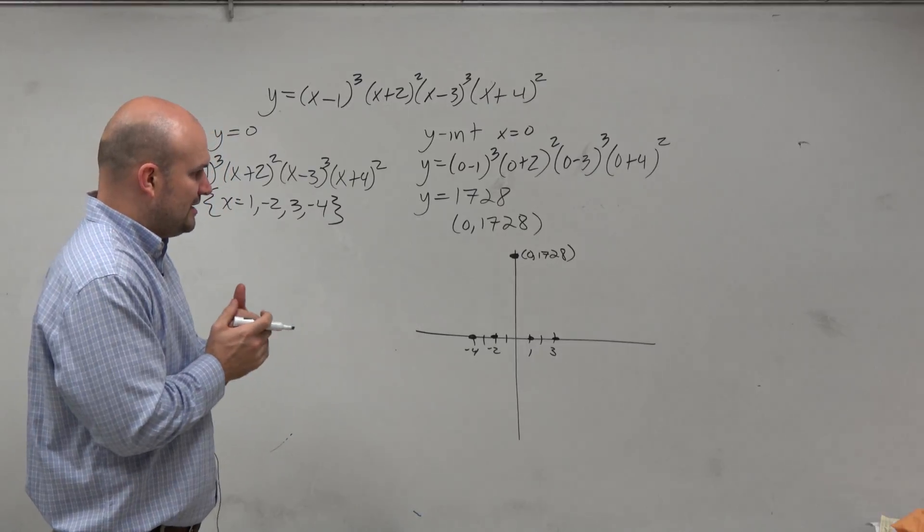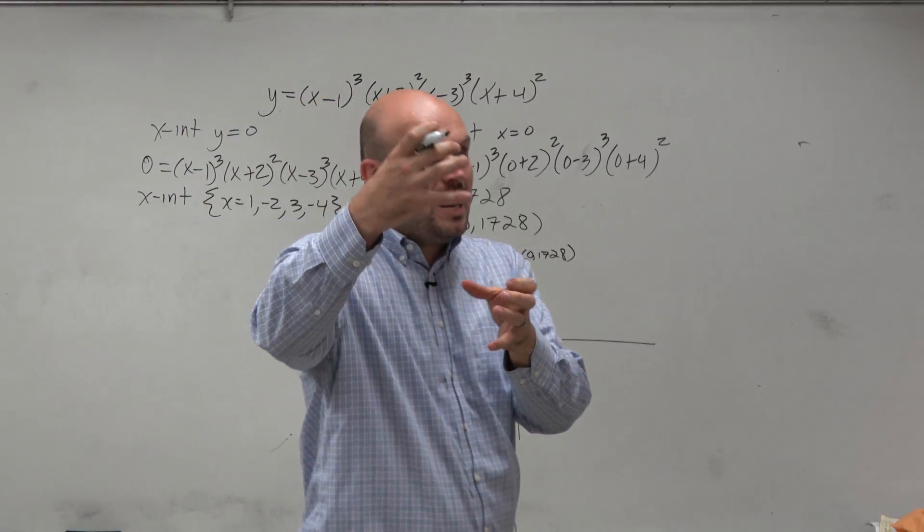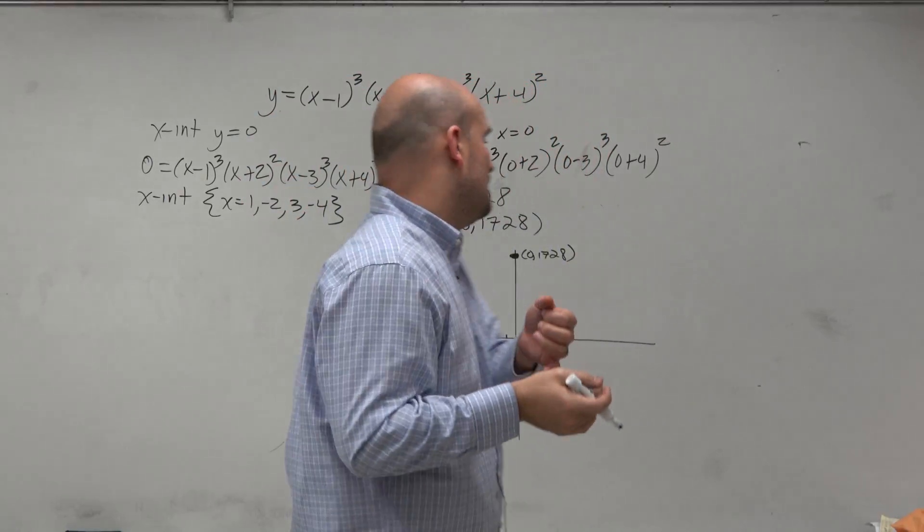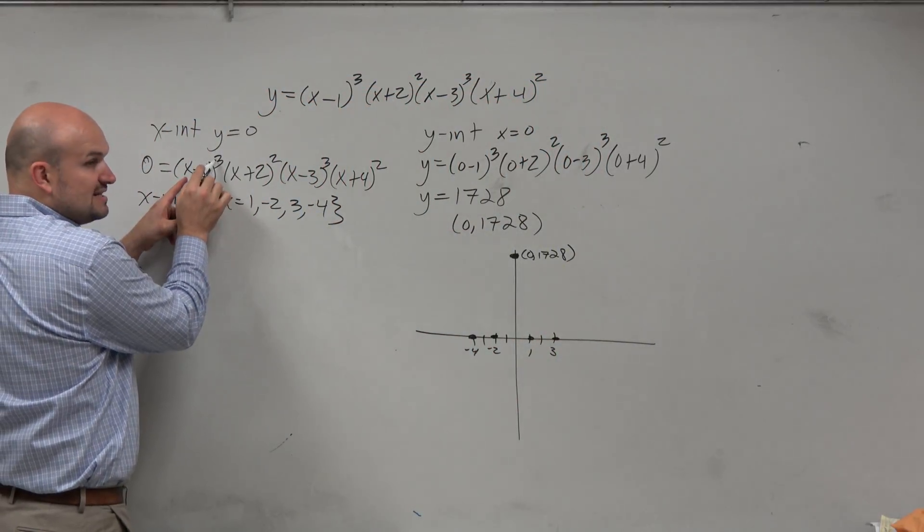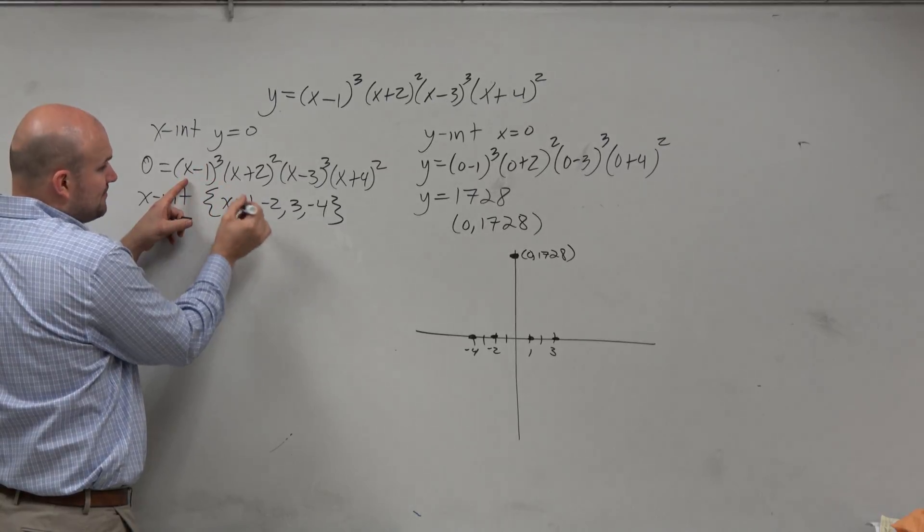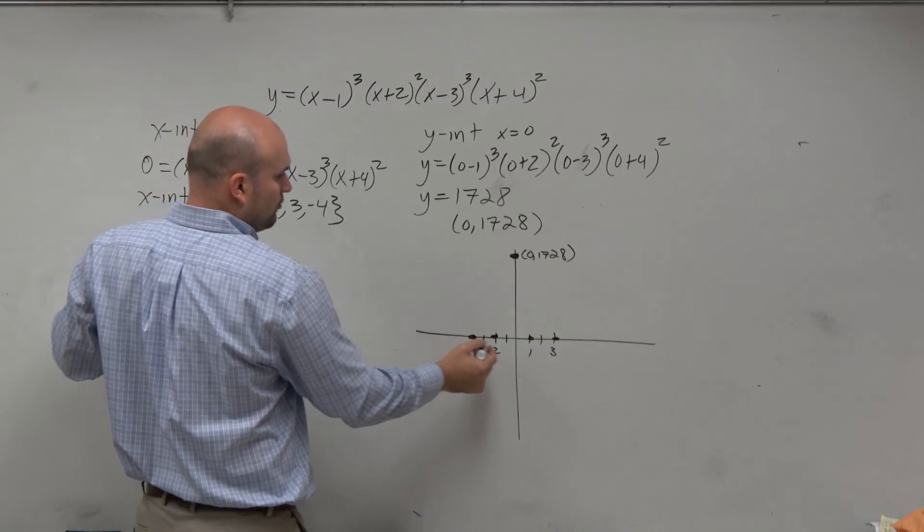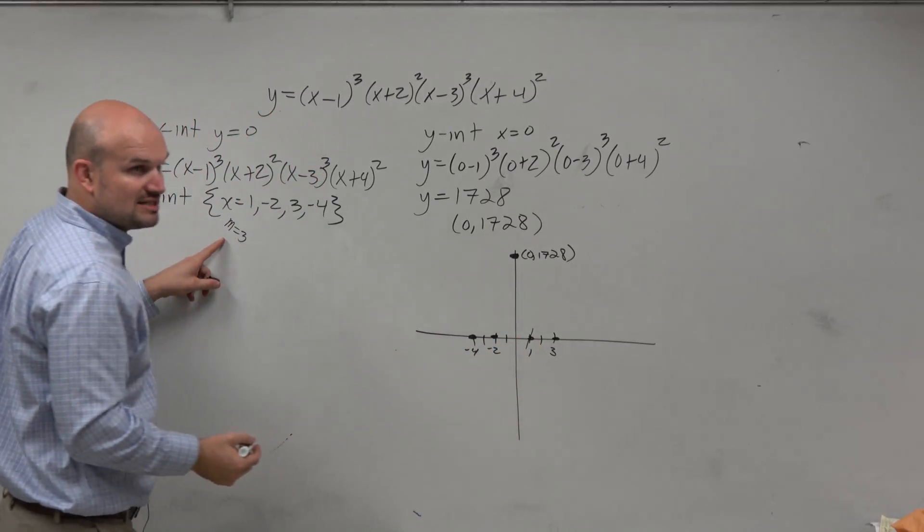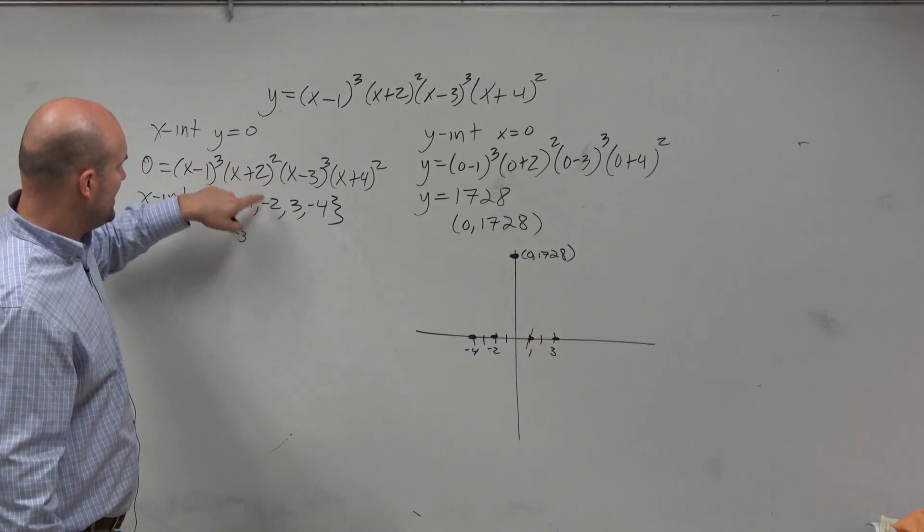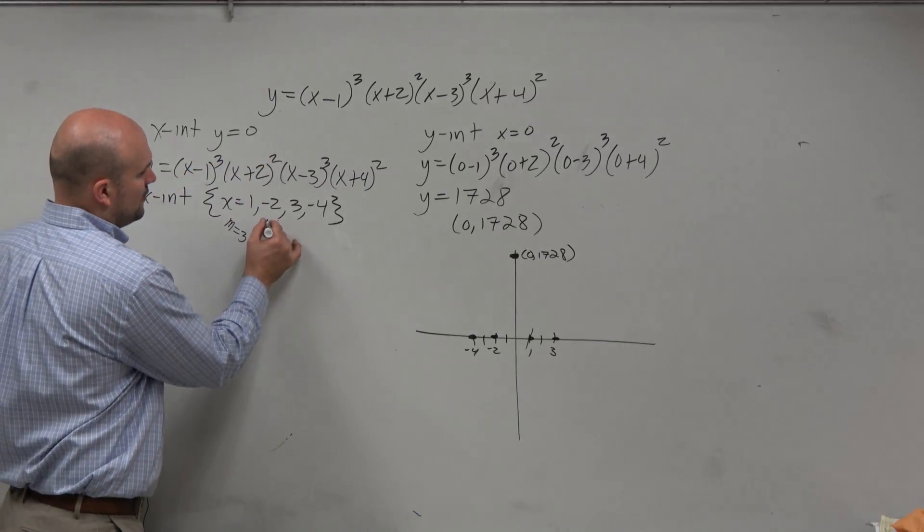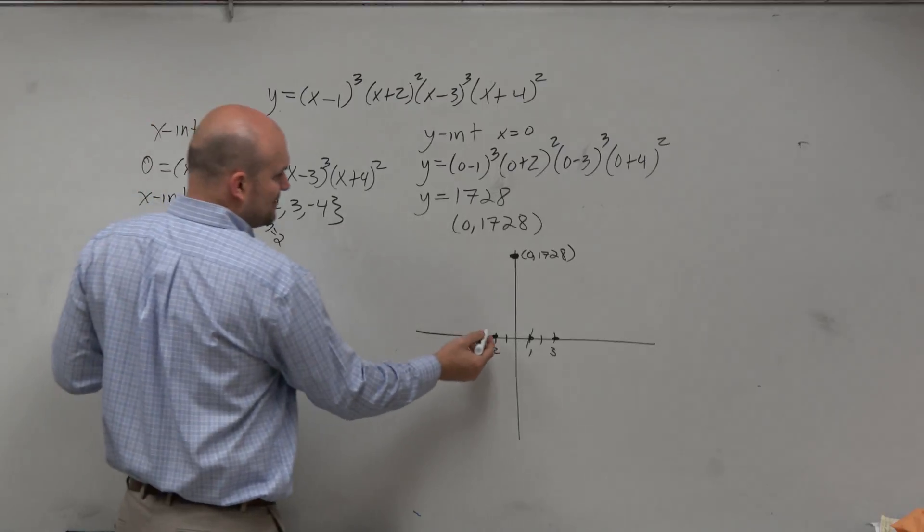Now we've got to look at, well, again, what we noticed is the power that a factor is raised to affects does the graph cross or bounce? So we look at 1, and we can see that it has a multiplicity of 3. So we'd say multiplicity equals 3, which is odd. So therefore, at 1, we know the graph crosses. Here we look at my zero of negative 2 has a multiplicity of 2. So therefore, we know since the multiplicity is even, it's going to bounce.